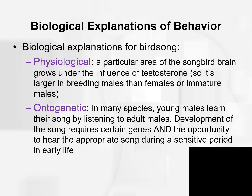Kalat walks us through these biological explanations giving an example of each using birdsong. A physiological explanation of birdsong might be that a particular area of the songbird brain grows under the influence of testosterone. This explains why it's larger in breeding males than in females or in immature males — a purely physiological influence of testosterone on a region of the brain.